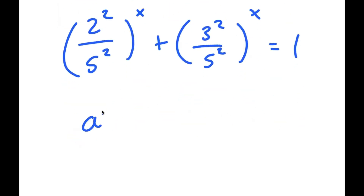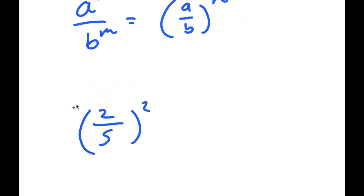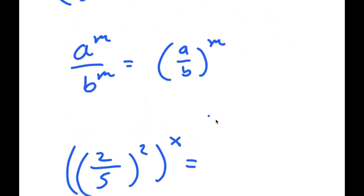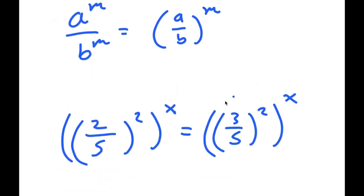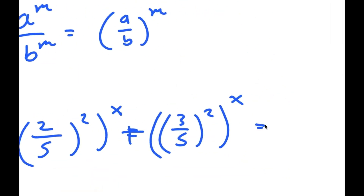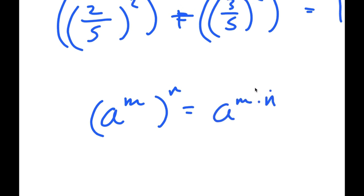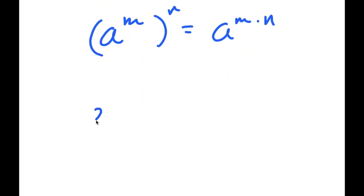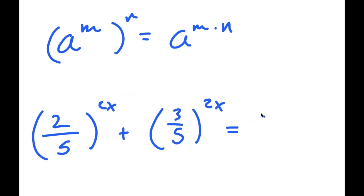And I can rewrite 9 over 25 as 3 squared over 5 squared. Now since a to the power of m over b to the power of m equals a over b to the power of m, 2 squared over 5 squared turns into 2 over 5 squared, and 3 squared over 5 squared turns into 3 over 5 squared. And if I have something in the form a to the power of m to the power of n, this equals a to the power of m times n. So I get 2 over 5 to the power of 2x plus 3 over 5 to the power of 2x is equal to 1.